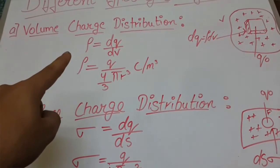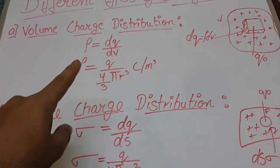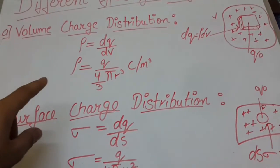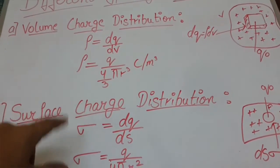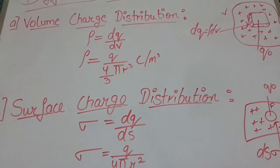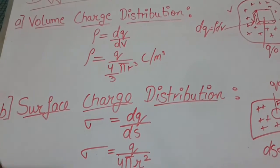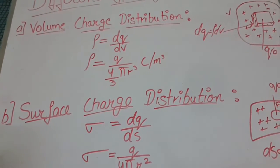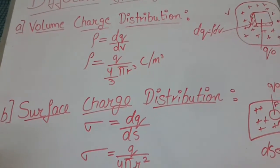Here rho denotes the volume charge density which is equal to the charge per unit volume. We know the formula of volume which is equal to 4 by 3 pi r cube. So by putting the value here we can get that rho is equal to q upon 4 by 3 pi r cube coulomb per meter cube.